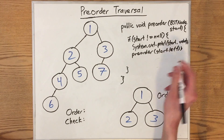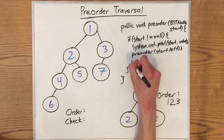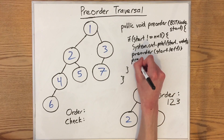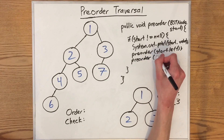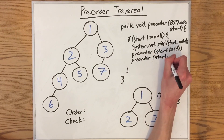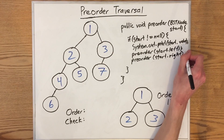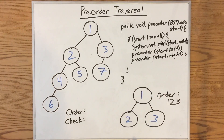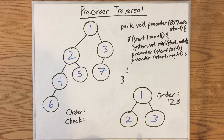We also know that pre-order repeats this process on the right subtree, so all we have to do is call pre-order on start.right as well. After that, the recursion will take us to the deepest ends of the tree and make sure that we print out every single value.